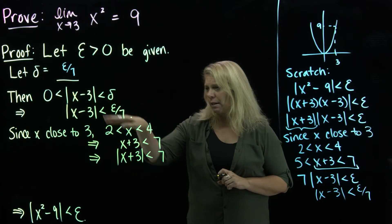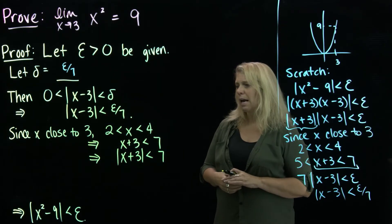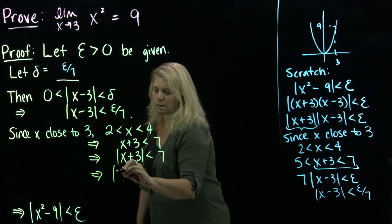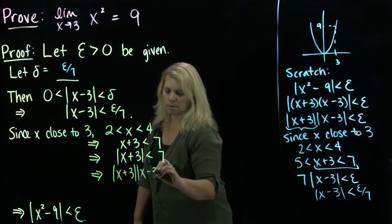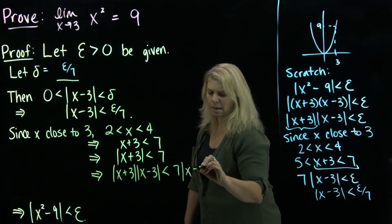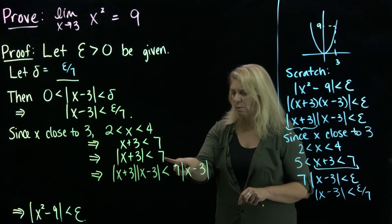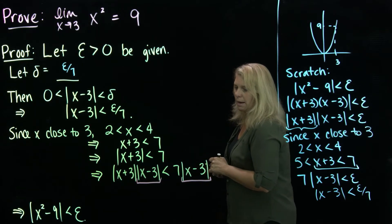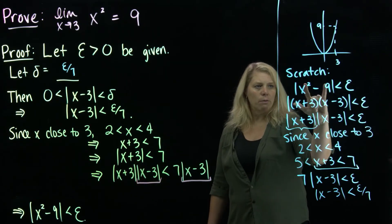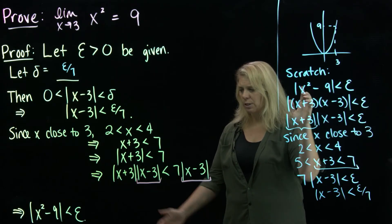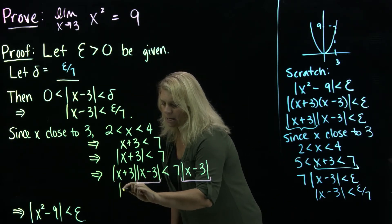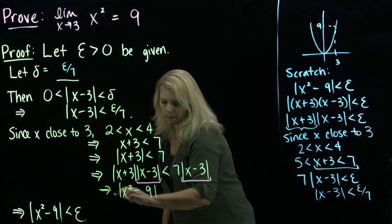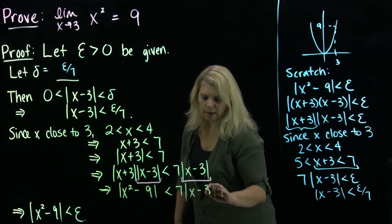I'm going to take the inequality |x plus 3| less than 7 and multiply both sides by |x minus 3|. As long as I'm multiplying both sides by the same positive quantity, that preserves the inequality. So I multiply both sides by |x minus 3|. On the left side, I can work back through the factoring: the product of those two absolute values gives me |x squared minus 9|. So the implication is: |x squared minus 9| is less than 7 times |x minus 3|.